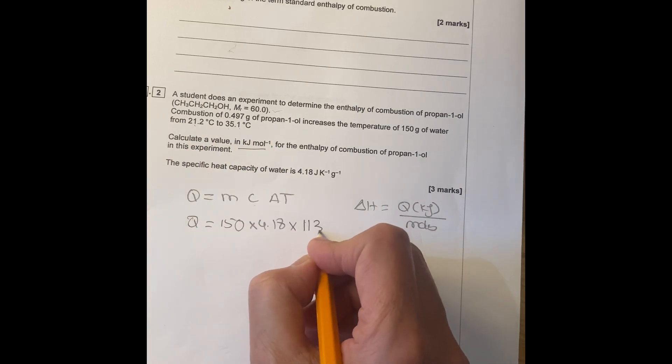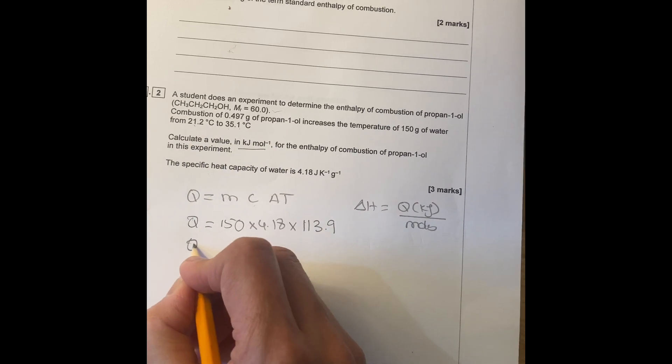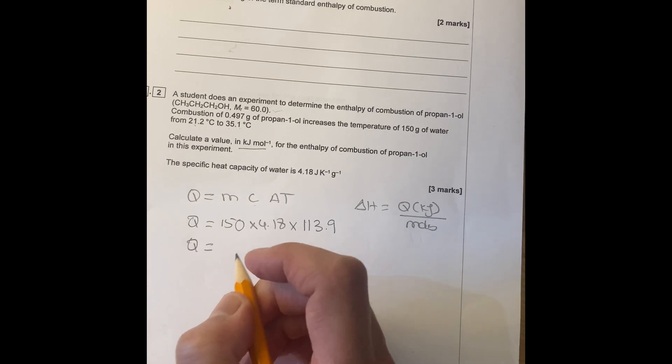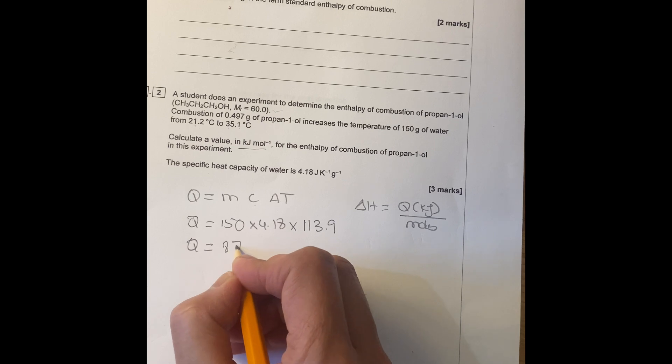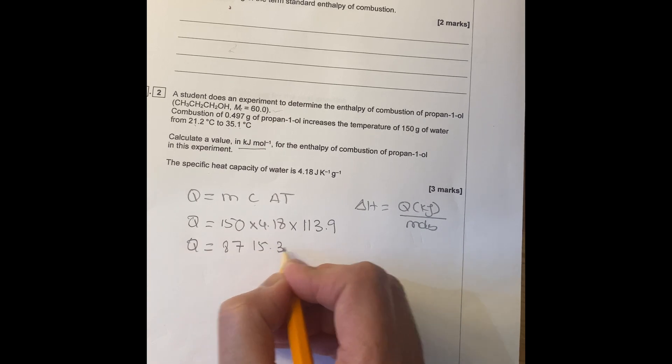Which gives you 13.9. So Q equals to 87, when you do the calculation, 8715.3 joules.